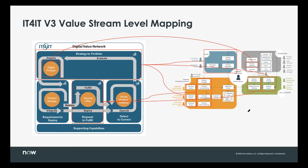IT4IT doesn't make a distinction between types of services — as long as it supports these different value streams and you have an offering of some sort, you formalize that offering in agreement with your consumers. The next area that maps over is largely the detect-to-correct area, where we have actual product instances — these are the assets and the integrations between those assets and the configuration of those assets into an application service in our vernacular. This is where the actual instances and application services and all the underlying CI types are, which we discover and make sure we understand what the current state looks like when dealing with operational processes.